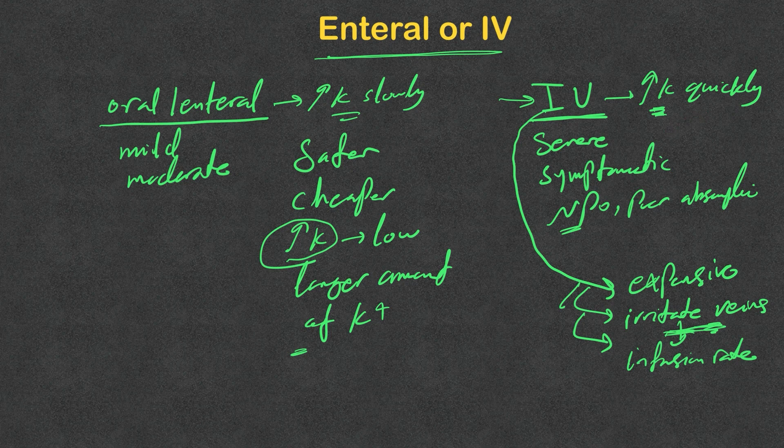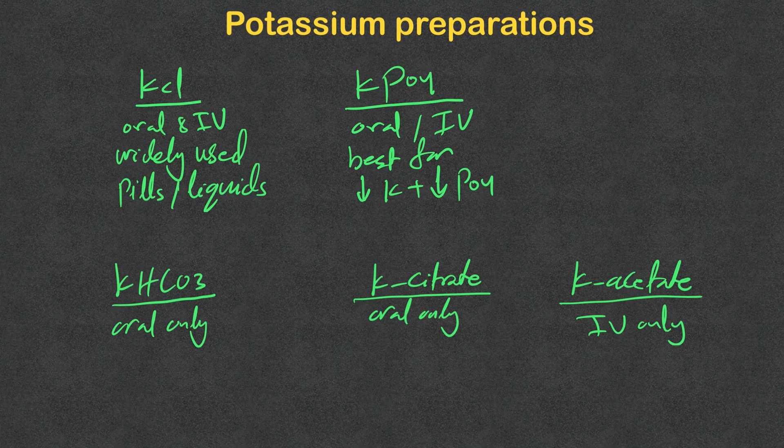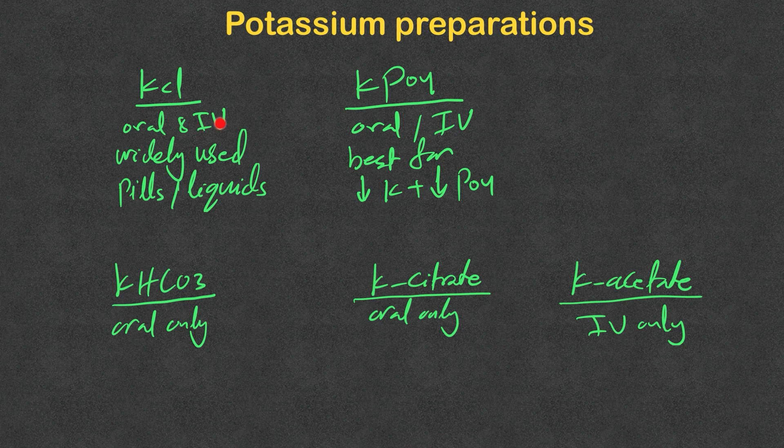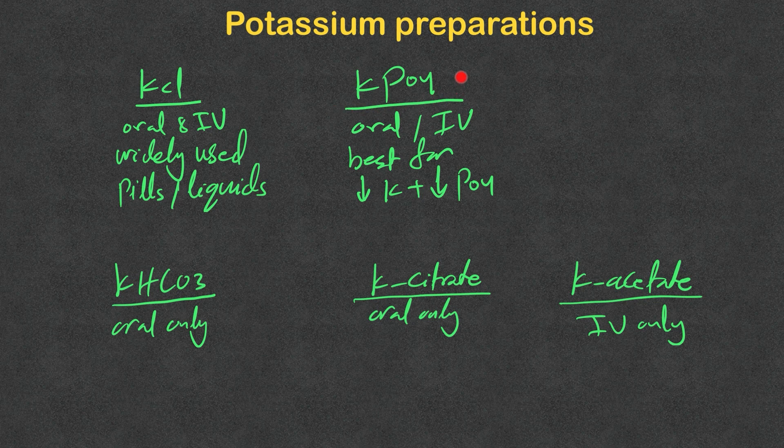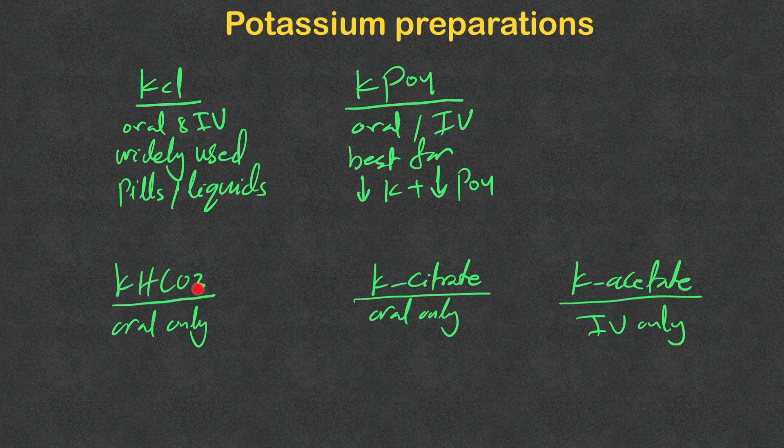What are the available potassium preparations? The most widely used and well-known is potassium chloride, KCl, available in oral and IV. The oral one is available in pills, powders, and liquid or elixir form. The second one is potassium phosphate. I would only think about this if there is a combination of hypokalemia and hypophosphatemia. It's available in oral and IV.